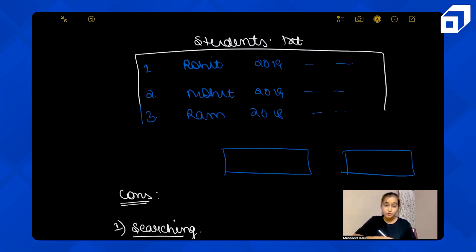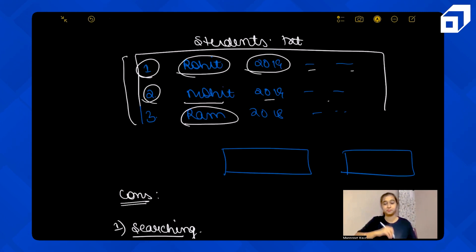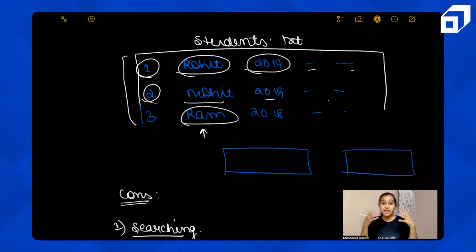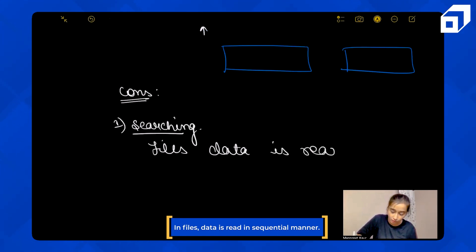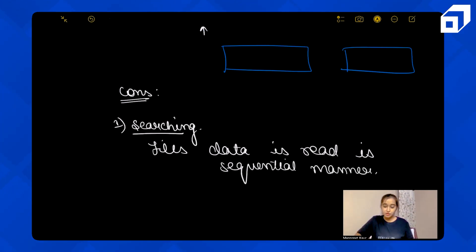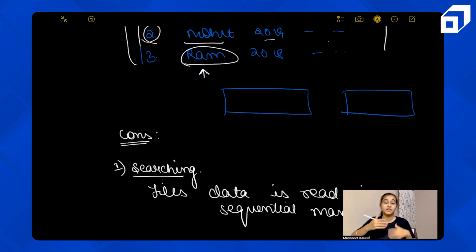To search for Ram, I have to go through the whole file — first Rohit, then the 2019 record, then Mohit, and eventually Ram. Even if I don't need information about Rohit or Mohit, I still have to traverse the entire file, because in file-based systems data is read sequentially — byte by byte — until it matches the value you want. So searching becomes very slow and inefficient.